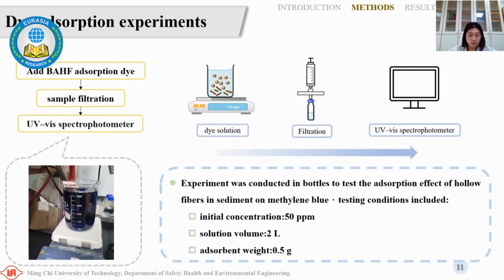The adsorption efficiency of methylene blue by the biochar hollow fiber was tested using a batch experiment. Testing conditions include an initial concentration of 15 mg per liter, a solution volume of 2 liters, and an adsorbent weight of 0.5 grams. After filtering the sample, the adsorption efficiency was confirmed using a spectrophotometer.